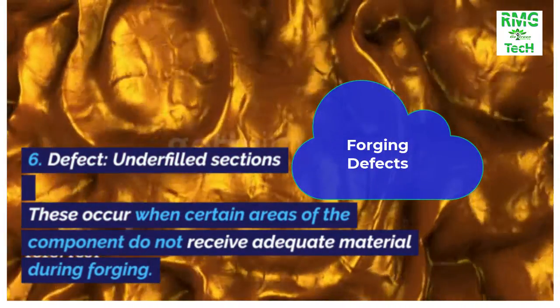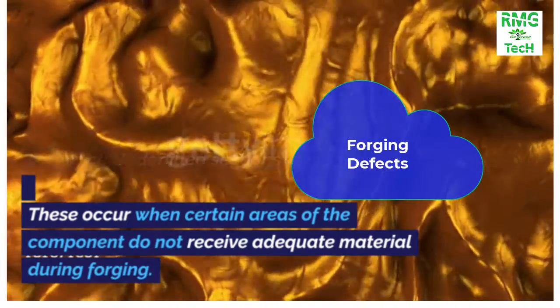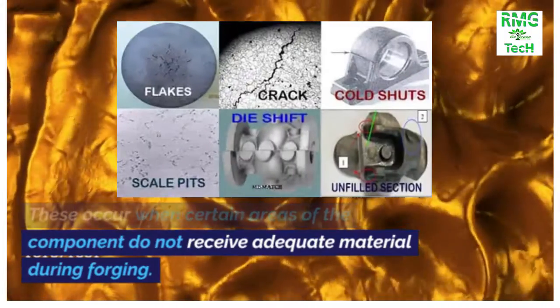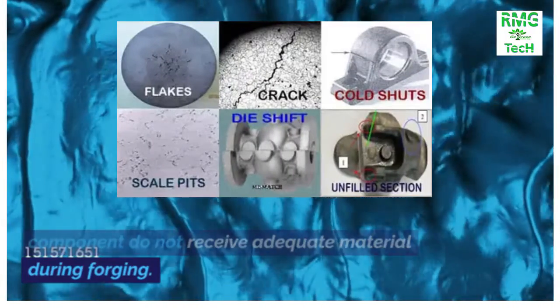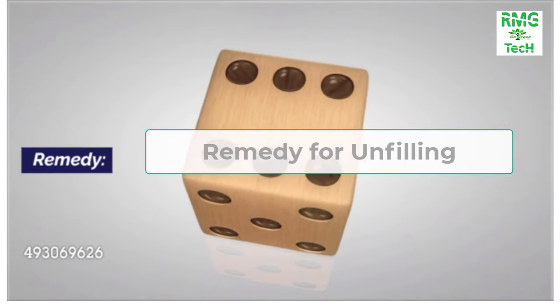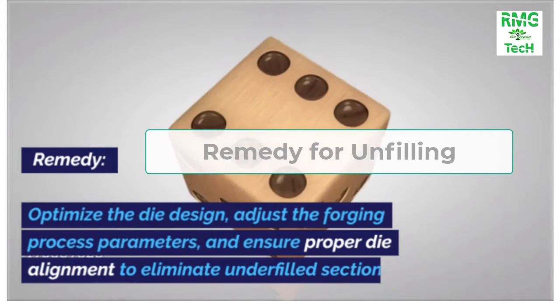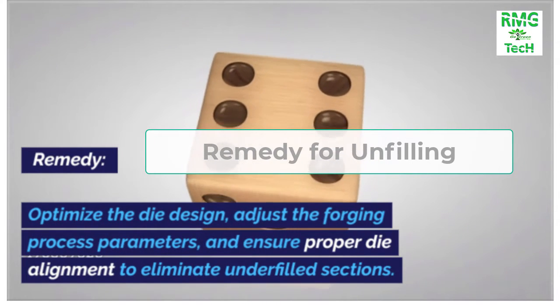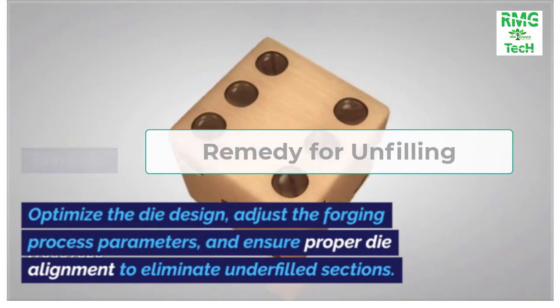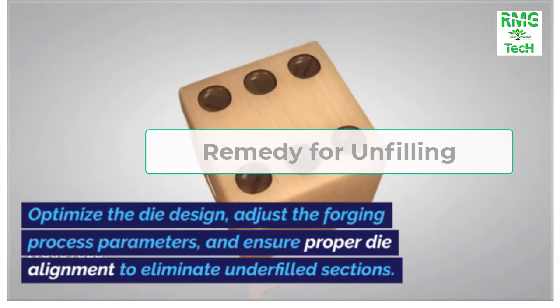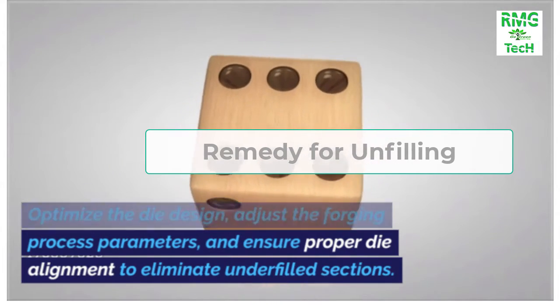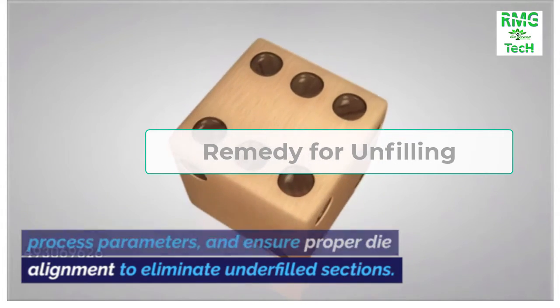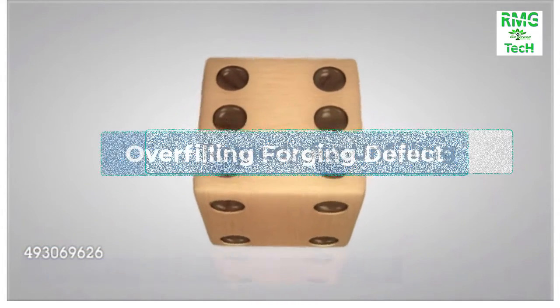Defect 6: Underfilled sections. These occur when certain areas of the component do not receive adequate material during forging. Remedy: Optimize the die design, adjust the forging process parameters, and ensure proper die alignment to eliminate underfilled sections.